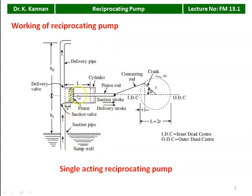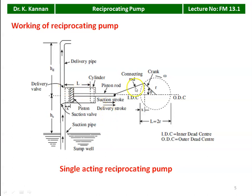The height from the water level in the sump to the center of the cylinder is called suction head, HS. Similarly, from the center of the cylinder to the top of the water level in the delivery tank is called delivery head, HD. There is a delivery valve at the entrance of the delivery pipe and a suction valve at the end of the suction pipeline.